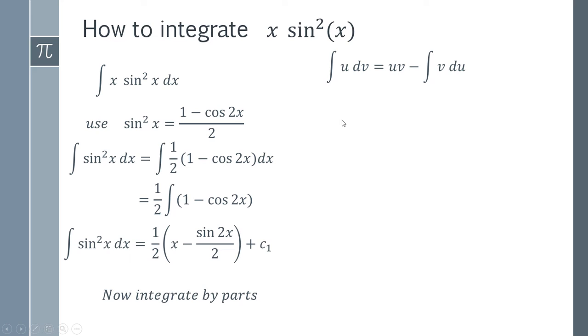And our integration by parts formula tells us that the integral of some function u multiplied by dv, where one of these functions is u, one of these functions is going to be dv, is equal to u times v minus the integral of v du.